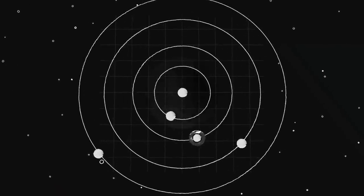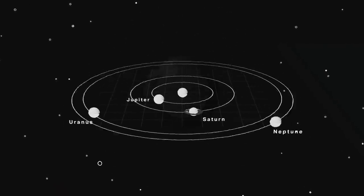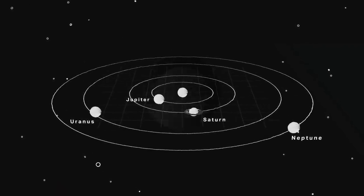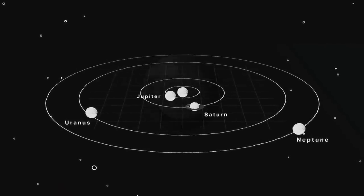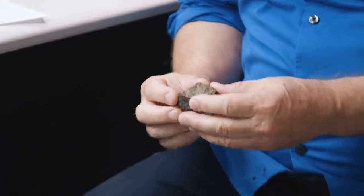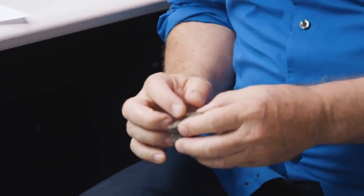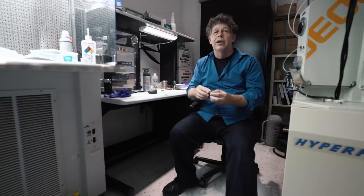One theory? The planets weren't always in the position they are now. Some of the models have Uranus-Neptune swapping places. Saturn and Jupiter moved in pretty far, then stopped, then moved back out again. And there's chances we can date that process by studying this rock and other rocks like it.